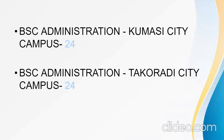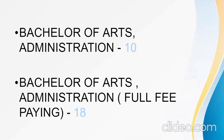Bachelor of Administration, Kumasi City Campus is 24. Bachelor of Science, Administration, Takoradi City Campus is 24. Note that BSc Administration Kumasi City Campus and BSc Administration Takoradi City Campus are all under the University of Ghana. Bachelor of Arts, Administration is 10. Bachelor of Arts, Administration, full fee-paying is 18.